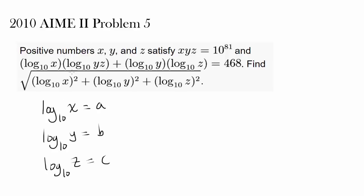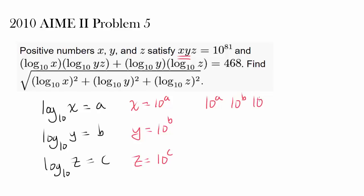What is this substitution doing for us? Well, it tells us x equals 10 to the a, y equals 10 to the b, and z equals 10 to the c, written in exponential form. So we know x times y times z, or 10 to the a times 10 to the b times 10 to the c, equals 10 to the 81st. That means 10 to the a plus b plus c equals 10 to the 81, so a plus b plus c equals 81.